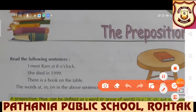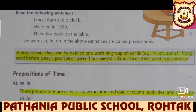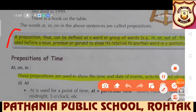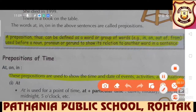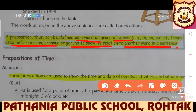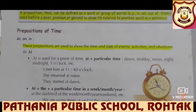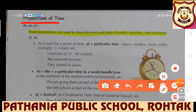So students, here we have chapter number 11 of Grammar — the prepositions. Please read the following sentences: 'I meet Ram at 8 o'clock.' 'She died in 1999.' 'There is a book on the table.' The words at, in, on in the above sentences are called prepositions. A preposition can be defined as a word or group of words used before a noun, pronoun, or gerund to show its relation to other words in the sentence. Let's start with our first type: preposition of time.